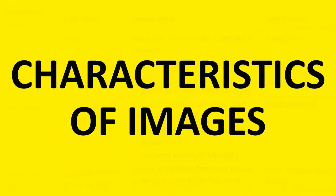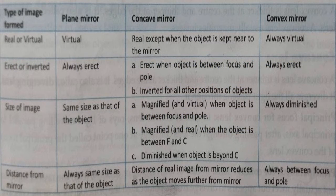First of all, we will discuss about the characteristics of images formed by a plane mirror, concave mirror, and convex mirror. First property: real or virtual. The image formed by a plane mirror is virtual. For a concave mirror, except when the object is kept near to the mirror, it is real. And in a convex mirror, it is always virtual.